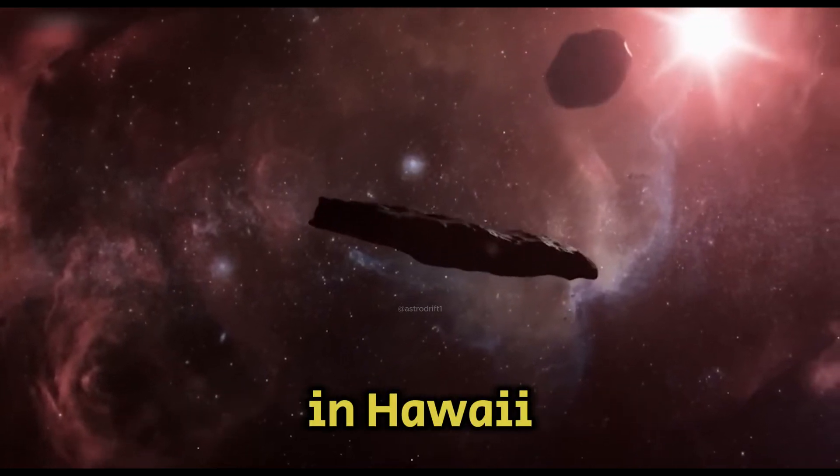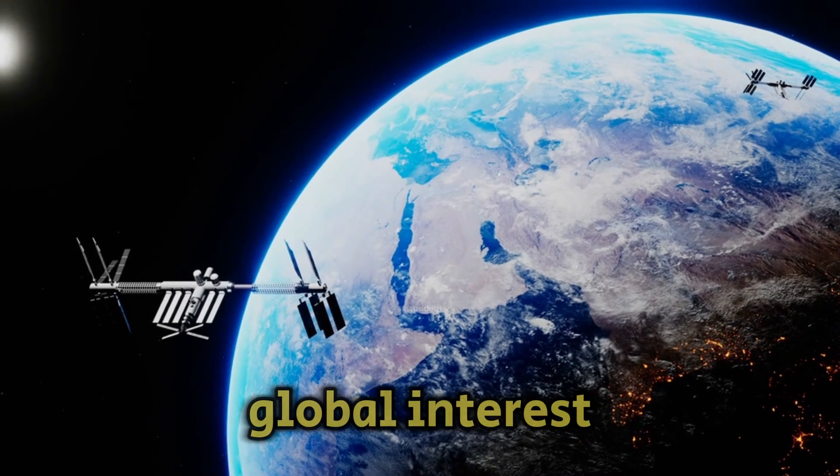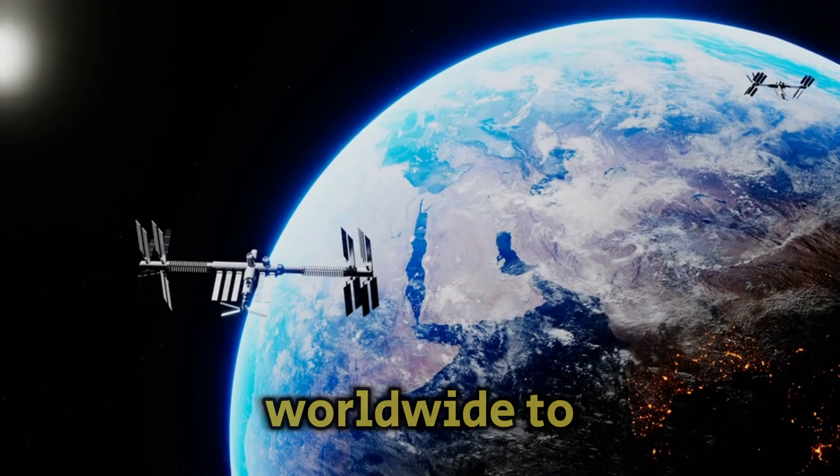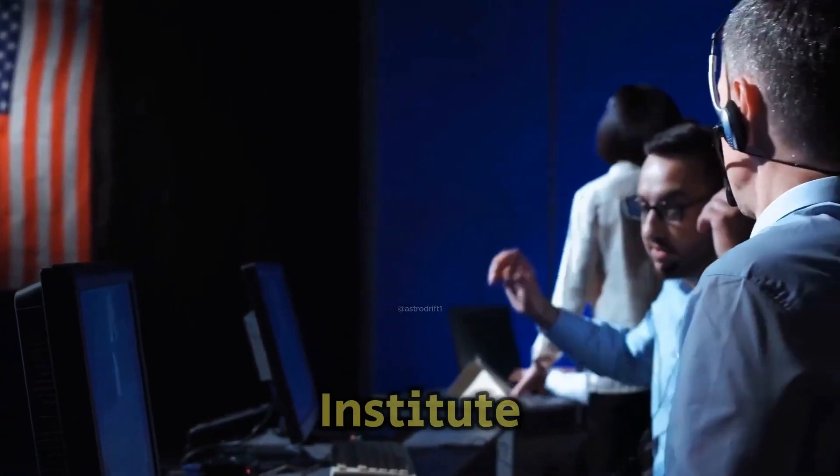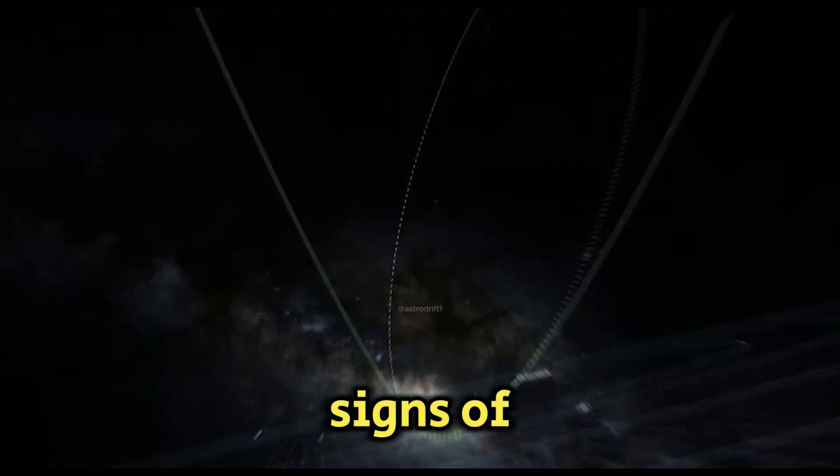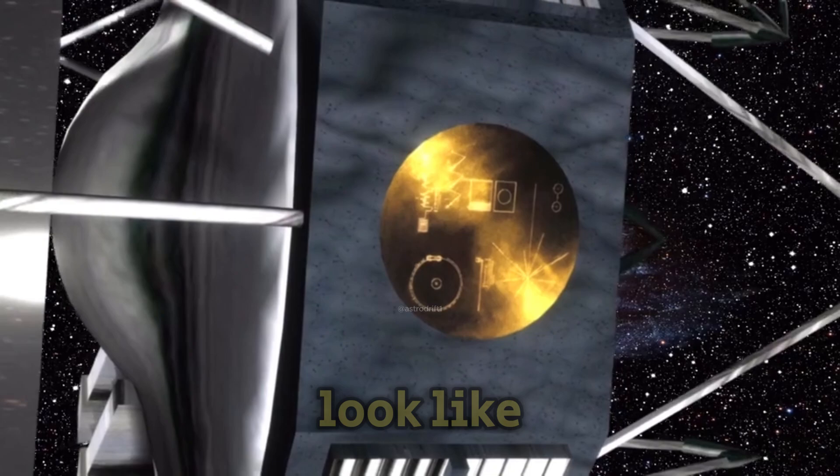Although discovered in Hawaii, Oumuamua sparked global interest, prompting astronomers worldwide to observe it through telescopes. It also caught the attention of researchers at the SETI Institute, who hoped to find signs of extraterrestrial technology associated with the object. But what does Oumuamua look like?